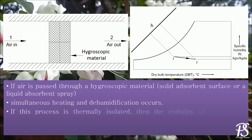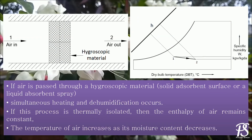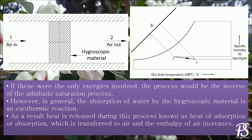In a chemical dehumidification process, the air is passed through a hygroscopic material which adsorbs moisture from the air. In this process, the specific humidity of air decreases because of loss of moisture. If the system is thermally isolated, then the enthalpy of air remains constant, and when specific humidity drops at constant enthalpy, there is a rise in temperature. In general, adsorption of water is an exothermic reaction. Hence, instead of being a constant enthalpy process, there is a slight rise in enthalpy of air.